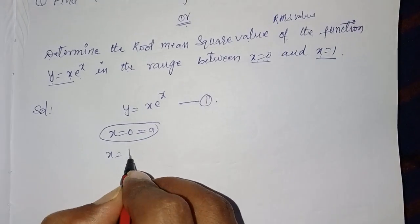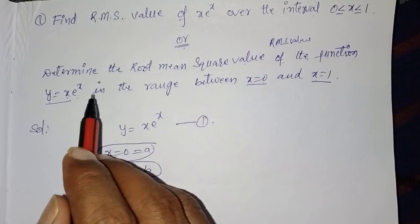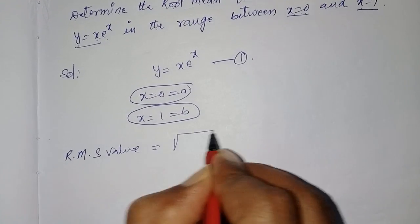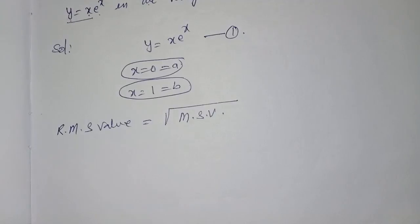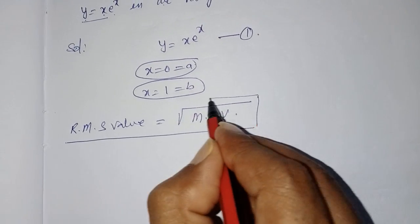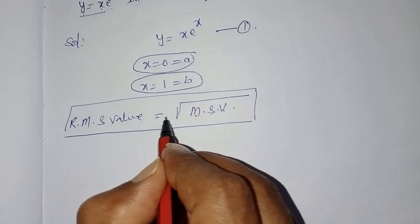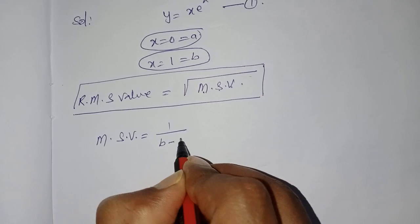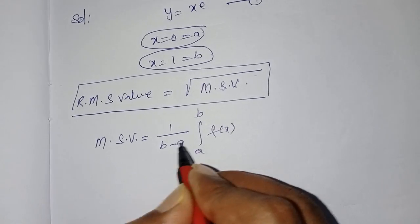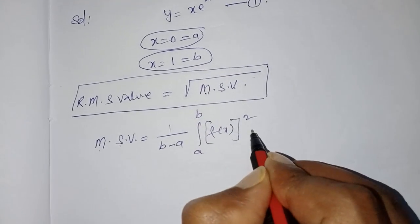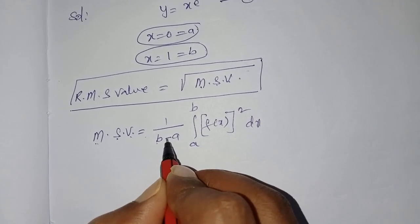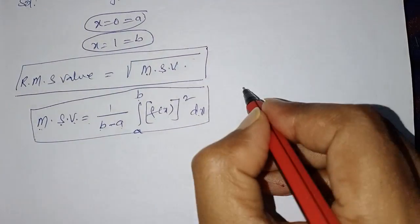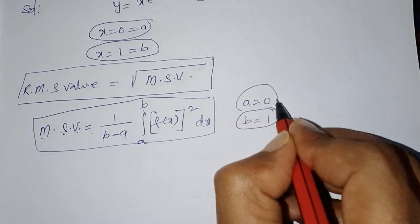We need to find the RMS value. RMS value equals the square root of the mean square value. So first we find the mean square value, then RMS = √(MSV). The mean square value formula is: MSV = (1/(b−a)) · ∫[a to b] [f(x)]² dx. We know a = 0 and b = 1 from the given question.